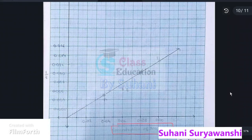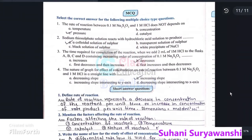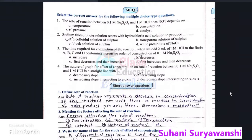Next we are going to see answers. First answer is the pressure. Second answer: sodium thiosulphate solution reacts with hydrochloric acid solution to produce a colloidal solution of sulfur.